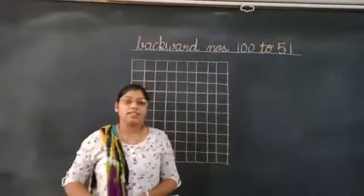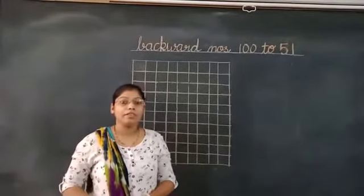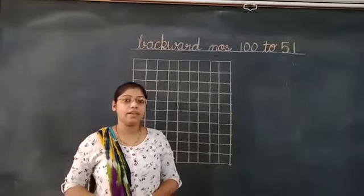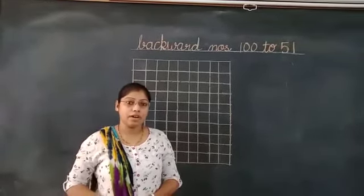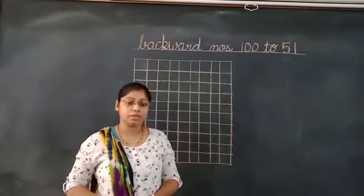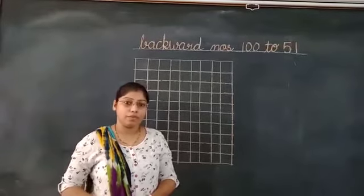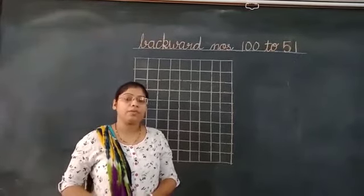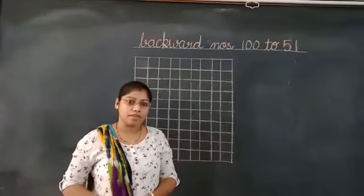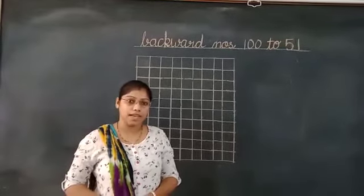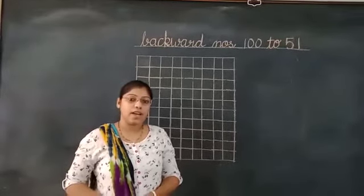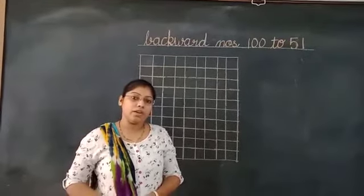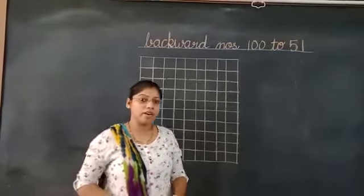You know that the serial numbers go from 51 to 100. For example: 51, 52, 53, 54, 55, 56, 57, 58, 59, and 60. Now we are going to learn backward numbers.